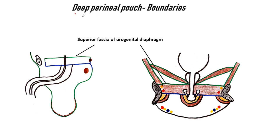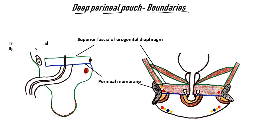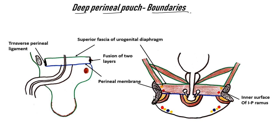Now we will see the deep perineal pouch and its boundaries. Above it is bounded by the superior fascia of the urogenital diaphragm. Below it is bounded by the perineal membrane. On the anterior side there is the transversus perineal ligament. On the posterior side, the superior fascia of the urogenital diaphragm and the perineal membrane will fuse, so this space is closed on all sides. On each side it is bounded by the inner surface of the ischiopubic ramus.